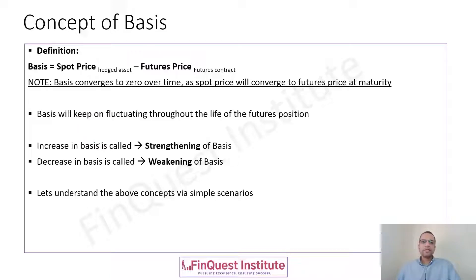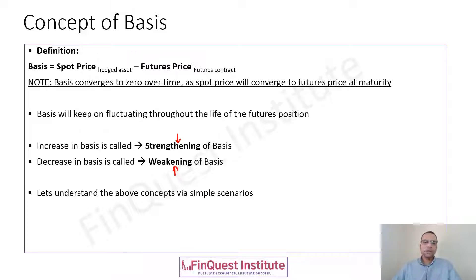Whenever the basis increases — that is, the difference between the spot price and the futures price rises — we call it a strengthening of basis. Whenever the difference between spot price and the futures price decreases, we call it the weakening of basis. This phenomenon continues throughout the life of the futures position right until the delivery date. Now let's understand the strengthening and weakening concepts through a simple example.